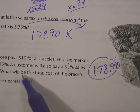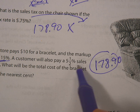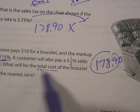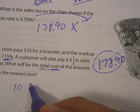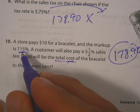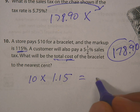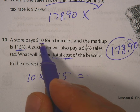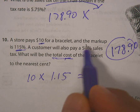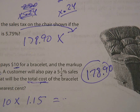A store pays $10 for a bracelet and the markup is 15%. The customer will also pay 5.5% tax — what is the total cost? Multiply $10 times 1.15 to get the marked-up price, add it to the original, then multiply by the tax decimal and add that in. Try to answer that question.